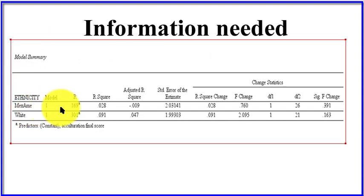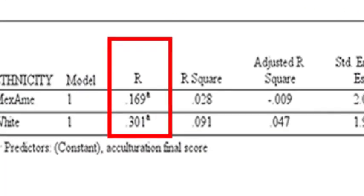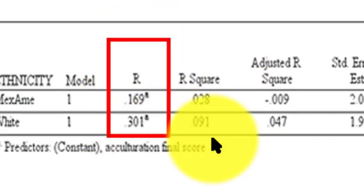So I'm getting all this information from this output from SPSS. The first group, their correlation is 0.169. Second group, 0.301. I'm going to make that a little bit bigger for you.